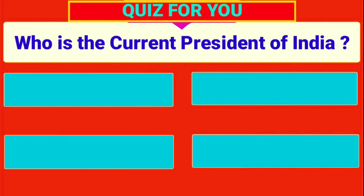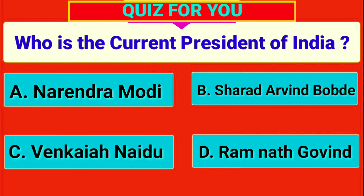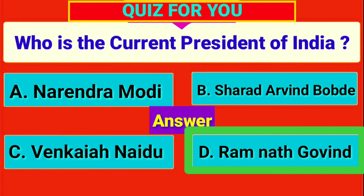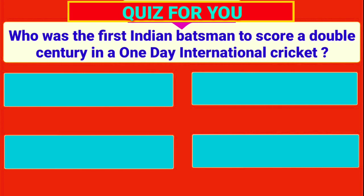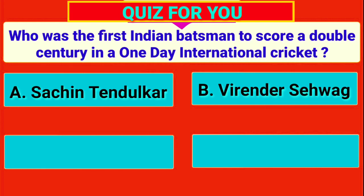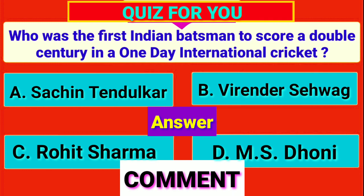This is a previous video question: Who is the current President of India? Answer: Ram Nath Kovind. This video's special quiz for you: Who was the first Indian batsman to score a double century in a One Day International cricket match? Guess the correct answer and type it in the comment section. We will check the correct answer in the next video.